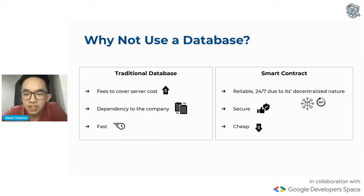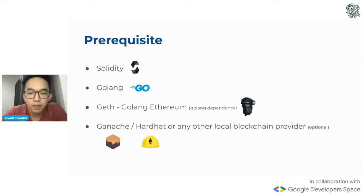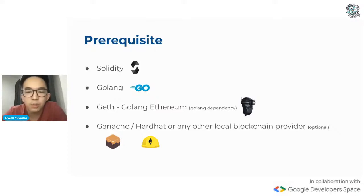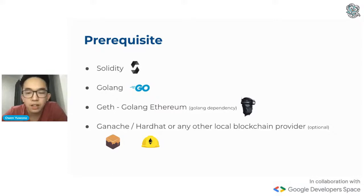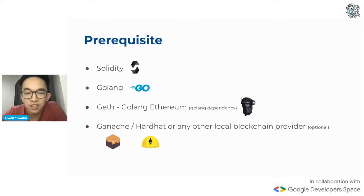Enough with the blockchain marketing — we're here to jump right in and develop a smart contract and interact with it. The first few things we need: first, Solidity — this is the programming language to program and compile the smart contract. Next is Golang, because this is a tutorial to build Ethereum apps on Golang. Third is Geth, short for Golang Ethereum — it's a library and CLI tools for connecting to the Ethereum blockchain. And then there is Ganache, Hardhat, and other local blockchain providers. This is optional because you can directly deploy to the test network, which is public. Or if you like to live dangerously, you can test it on the main network. But I personally like Ganache because of the UI.